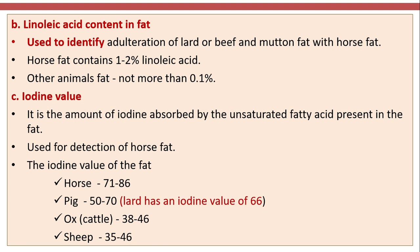Iodine value is the amount of iodine absorbed by the unsaturated fatty acids present in fat, and is used for detection of horse fat. The iodine value of horse fat is 71 to 86, pig 50 to 70, lard 66, and ox or cattle 38 to 46, sheep 35 to 46.